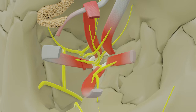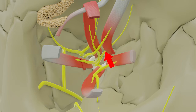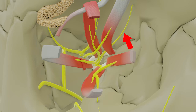The nasociliary nerve, the last of the three terminal branches of the ophthalmic nerve, enters the orbit through the middle part of the superior orbital fissure, lying between the two divisions of the oculomotor nerve. It crosses from lateral to medial above the optic nerve, then runs along the medial wall of the orbit between the superior oblique above and medial rectus below. It ends at the anterior ethmoidal foramen by dividing into the infratrochlear and anterior ethmoidal nerves. Its branches include the communicating branch to the ciliary ganglion, two or three long ciliary nerves, posterior ethmoidal nerve, infratrochlear nerve, and anterior ethmoidal nerve.